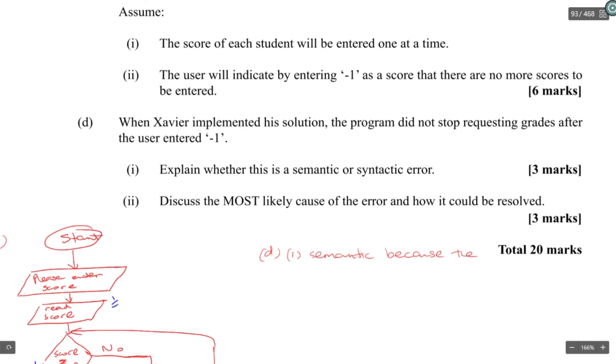Discuss the most likely cause of the error and how it would be resolved. Cause of the error would be that the program did not request a new value for score before the loop ended.